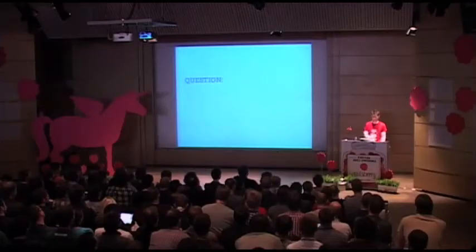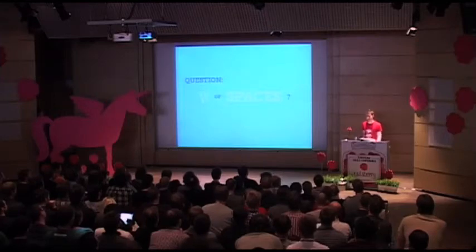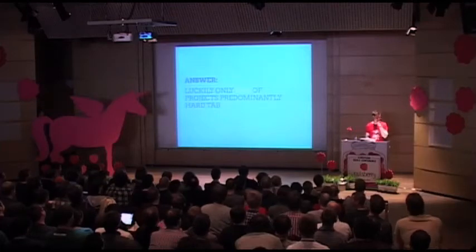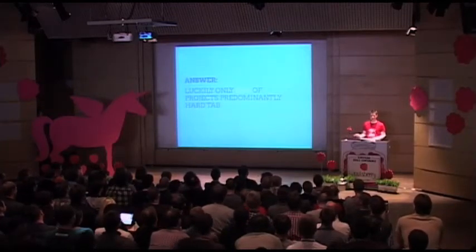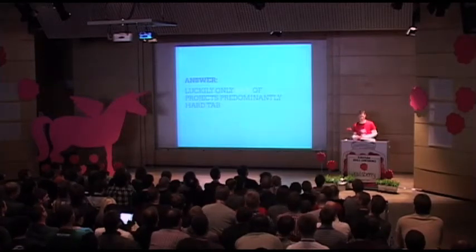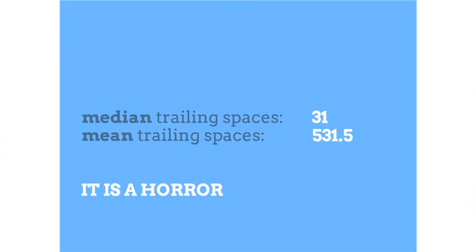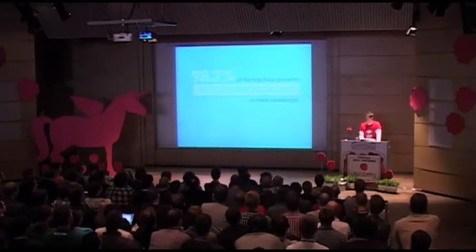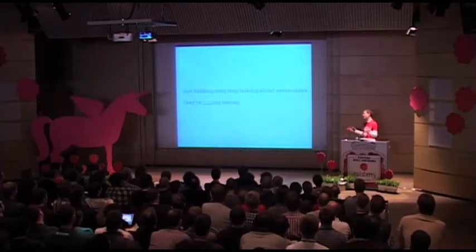I have a big question for you — possibly the biggest question of all time: do you hard tab or soft tab? I already know the answer. You are a horrible person if you hard tab. Luckily only about 8% of projects predominantly use hard tabs as the main tabbing mechanism. Equally as heinous is adding trailing spaces to your files — most have about 31 trailing spaces; if you look at the average it's like 531. Also, I looked into JavaScript directories in Rails projects — 98% of Rails projects avoid semicolons in JavaScript. Just kidding. For the love of God, stop talking about semicolons.